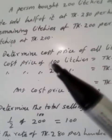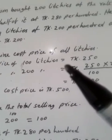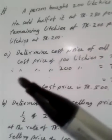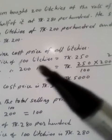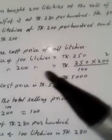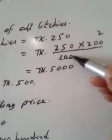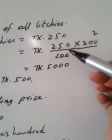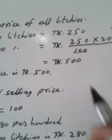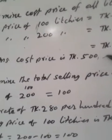A. Determine the cost price of all litchis. See, cost price of 100 litchis is 250. We have cost price of 200 litchis: 250 divided by 100, multiply by 200. If we divide 200 by 2, 2 multiply by 250 equals 500 Taka. Cost price of 200 litchis is 500 Taka.